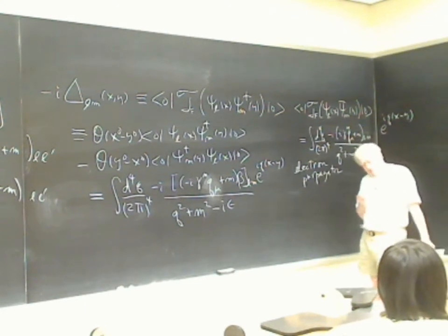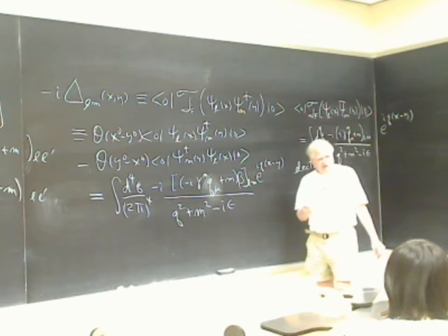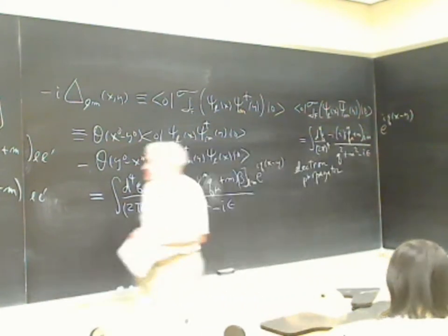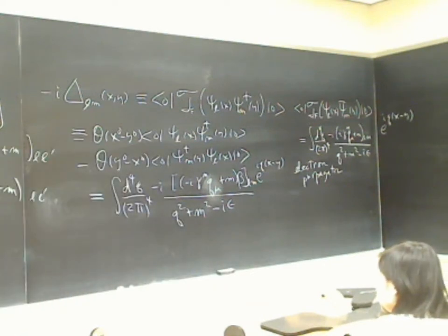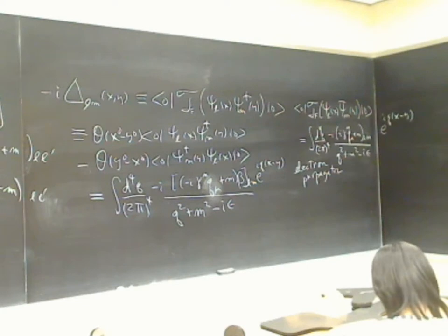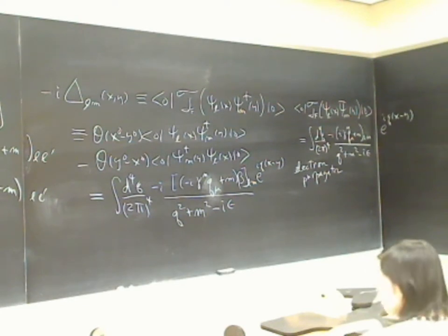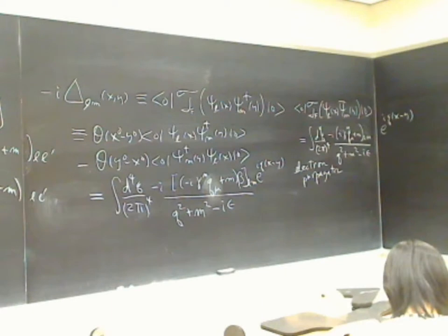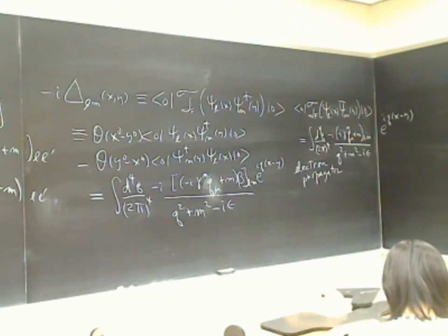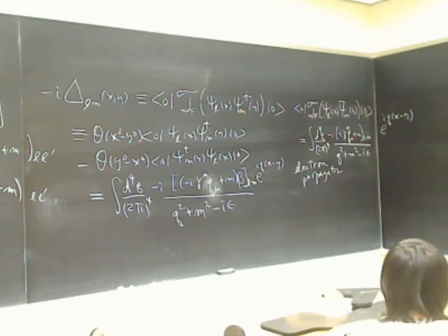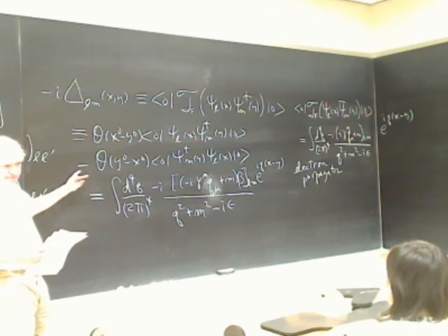Instead of S(T, 0) as we used in light-atom interactions, we're going to use S(infinity, minus infinity). We're now ready to start Compton scattering. We'll see how far we get — we certainly can't finish the calculation today, but we can get started and see why this minus sign appears.